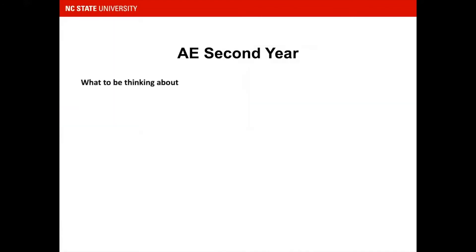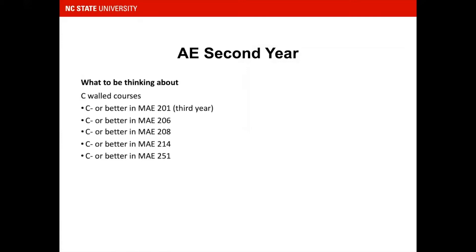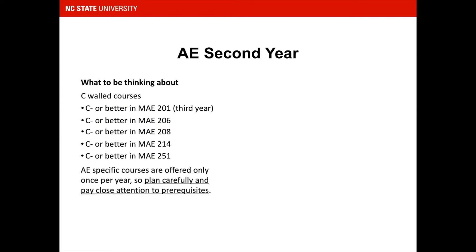What should you be thinking about in your second year? Be aware of the CWALL courses. At this level, CWALL means C-minus or better. CWALL courses for AE are MAE 201, which appears in your third year, MAE 206, MAE 208, MAE 214, and MAE 251. Again, it is important to remember that AE-specific courses are offered only once per year.